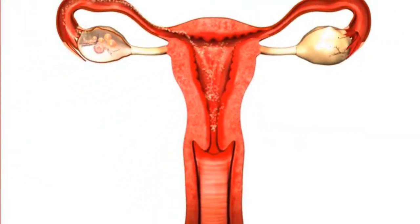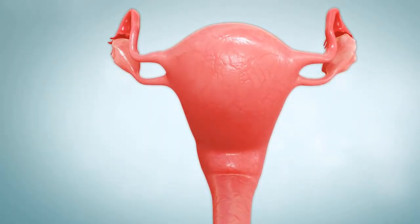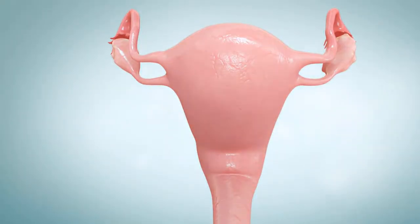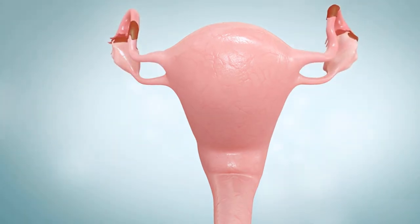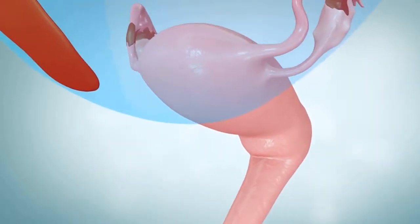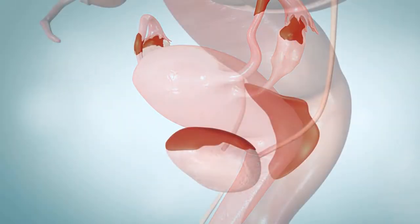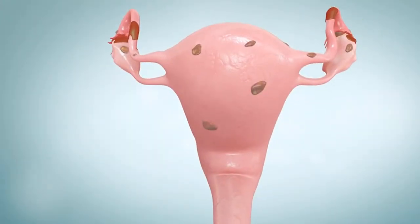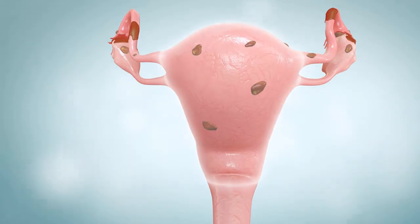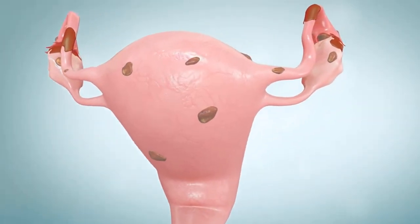The ovaries are a pair of almond-shaped glands positioned either side of the uterus. They are enclosed by the finger-like ends of the fallopian tubes, which are hollow passageways connecting the ovaries to the uterus. The uterus is a hollow pear-shaped organ with thick muscular walls, where the embryo grows to become a baby. It is attached to the upper end of the vagina. The eggs develop and mature inside the ovaries.